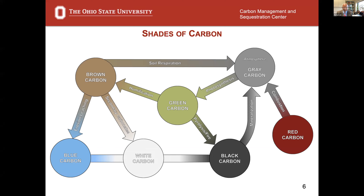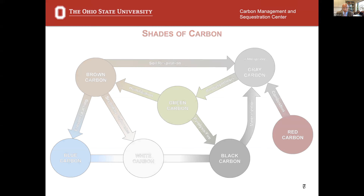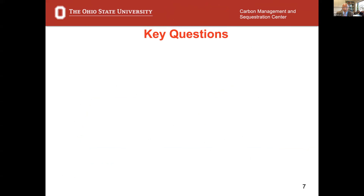As a result, the carbon stock in the atmosphere — the gray carbon — has gone up tremendously from 360 gigatons pre-agriculture to almost 900 gigatons, increasing 5 gigatons per year, because of land use conversion and fossil fuel combustion. The key questions I will try to address are several, and I will try to answer as much as I can.